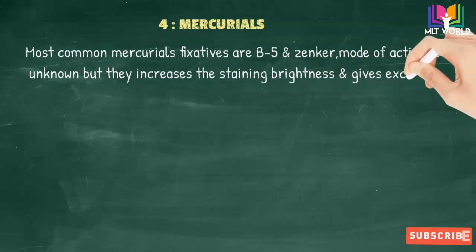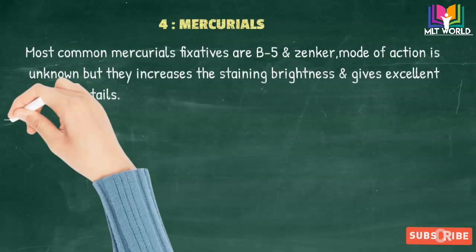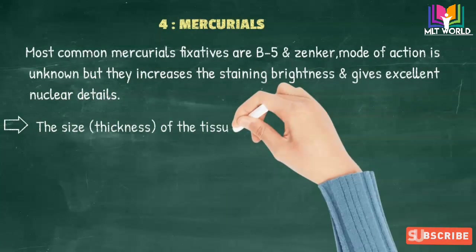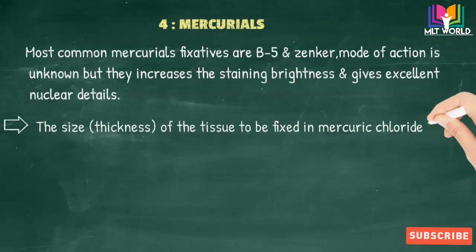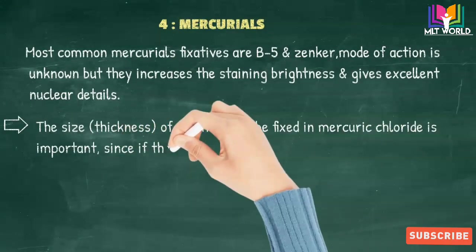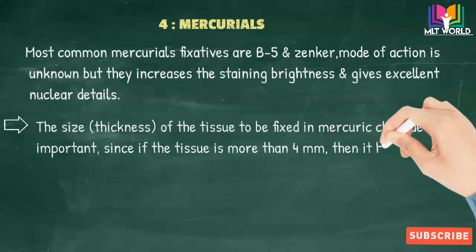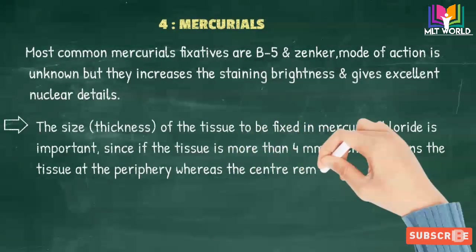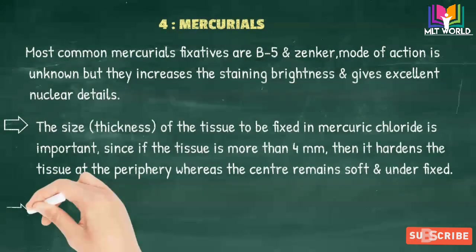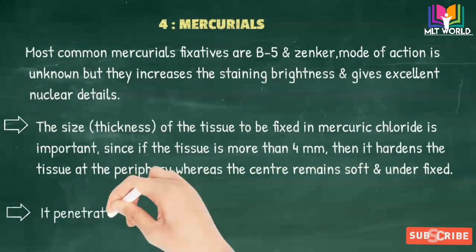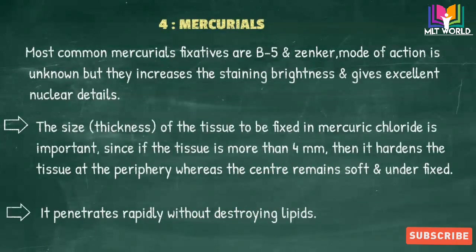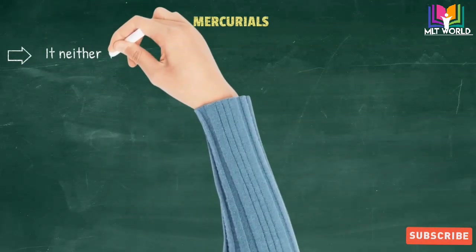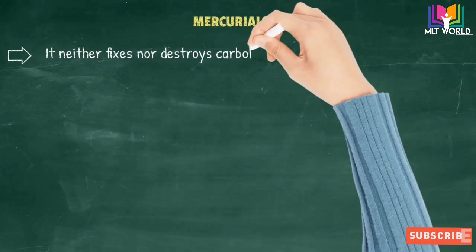The disadvantage is that mercurials penetrate slowly or poorly, causing tissue shrinkage. The size, meaning the thickness of the tissue to be fixed in mercurial chloride, is important. If the tissue is more than 4 millimeters, it hardens tissue at the periphery whereas the center remains soft. It takes long time for fixation but penetrates rapidly without destroying lipids.